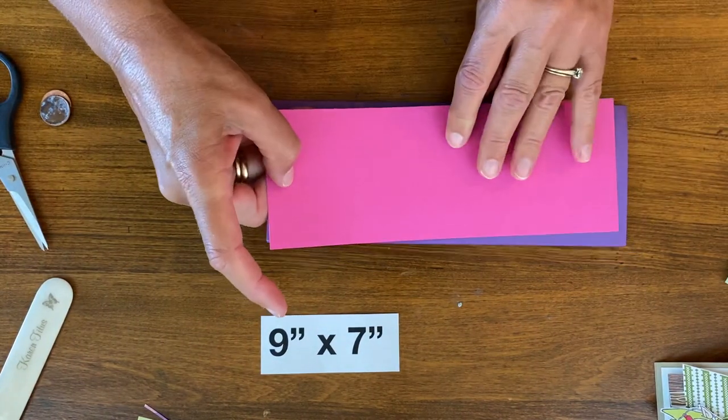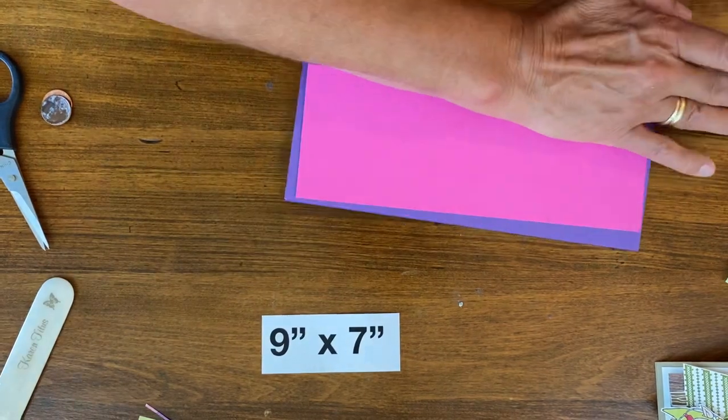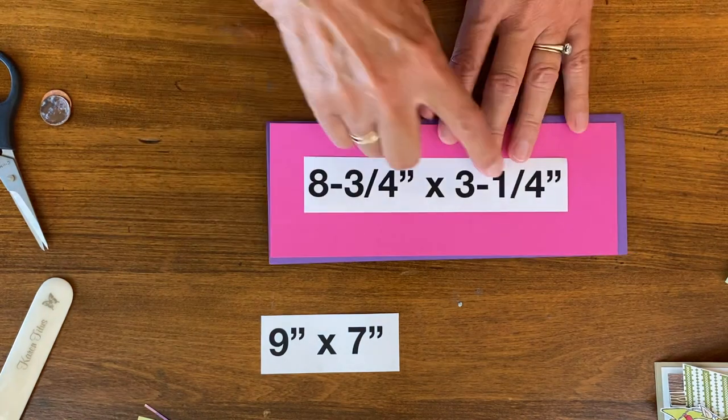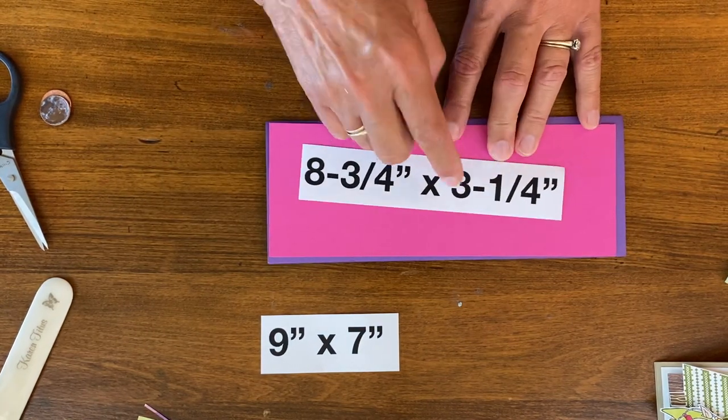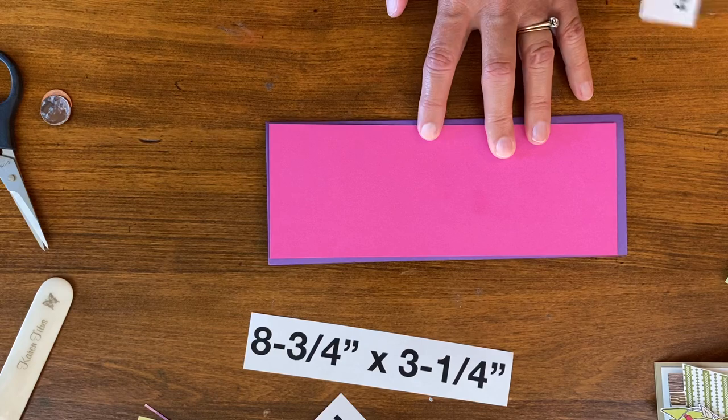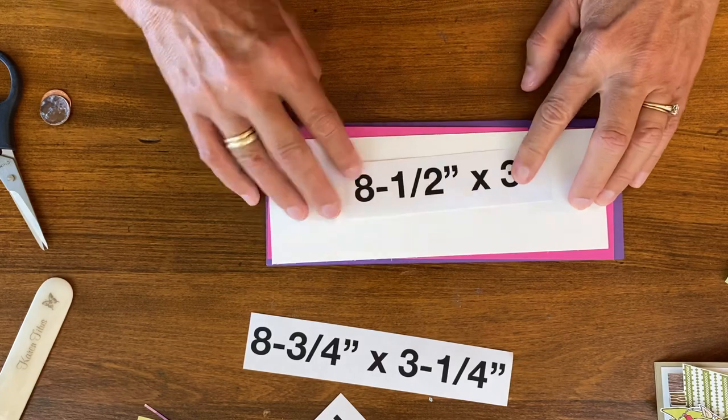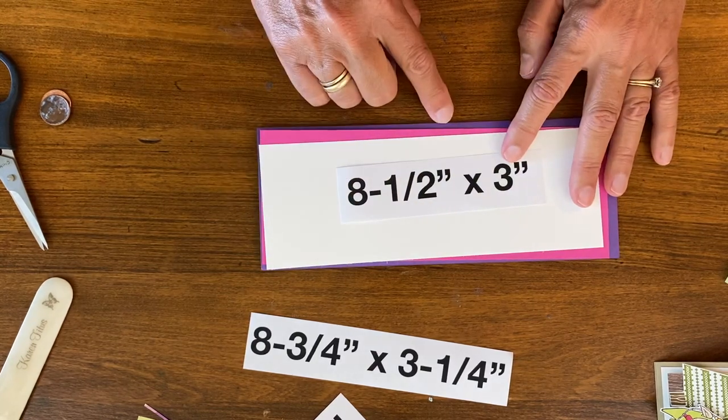So the layer I will cut for next to go under it is going to be eight and three quarters by three and one quarter. And then my top layer, and this is the layer we will be putting the slits through, this is eight and a half by three inches.